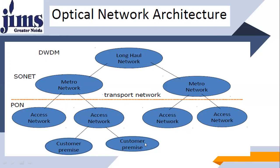We have the access network, then Customer Premises — our buildings, offices, multi-story buildings, houses. These are the customer premises. They access the network through the access network, accessing optical technology through the access network. These access networks connect with macro networks, forming the whole network. All these technologies come together to form the optical network architecture.